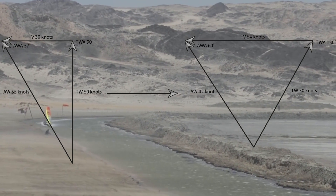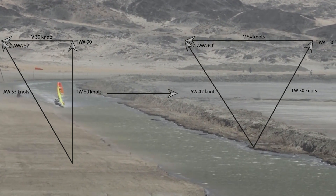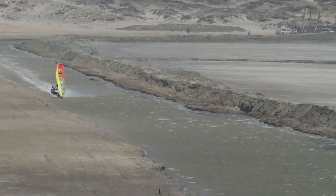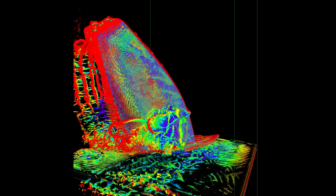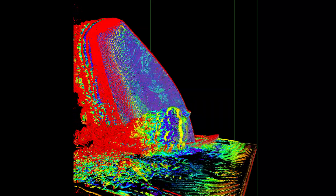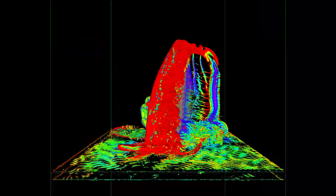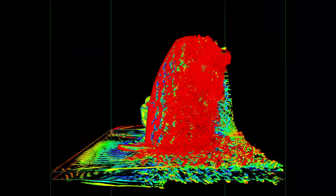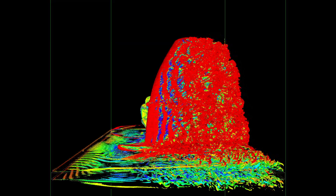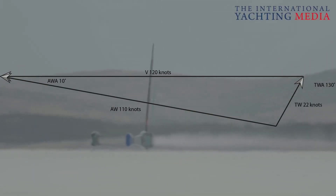As a second example, the world record sailed by Antoine Albeau on the channel in Luderitz. In 55 knots of wind he sailed 54 knots.